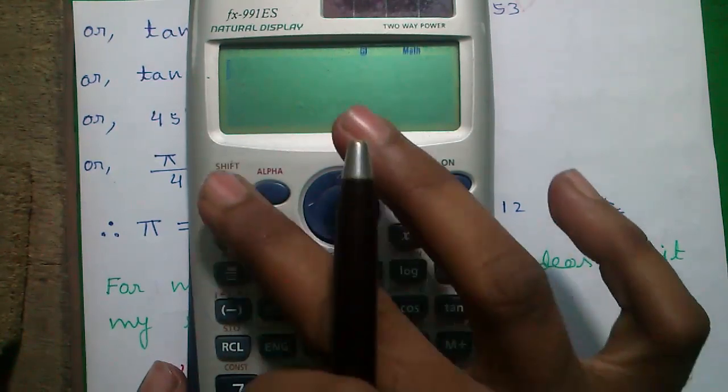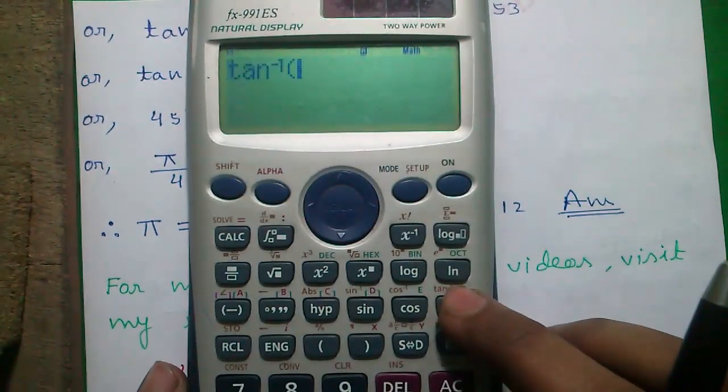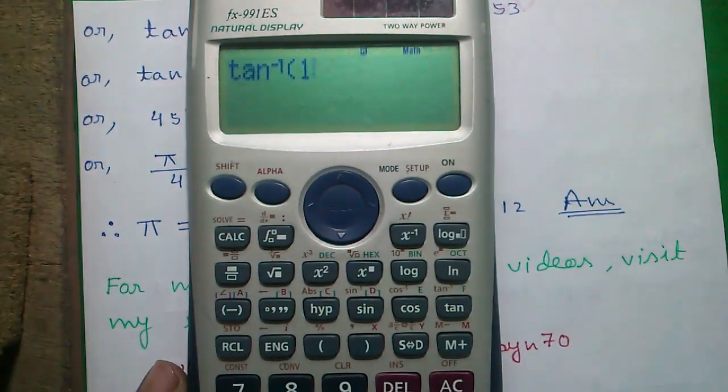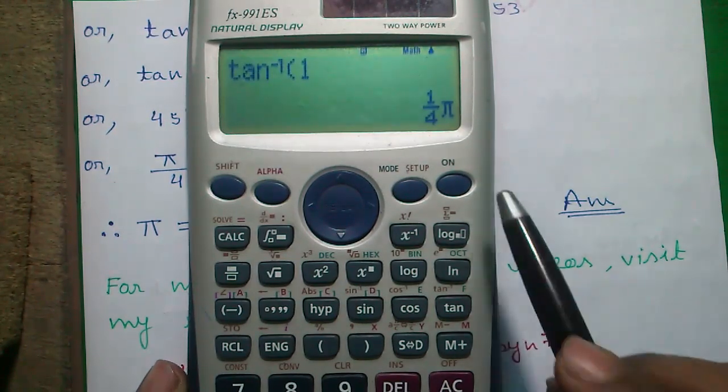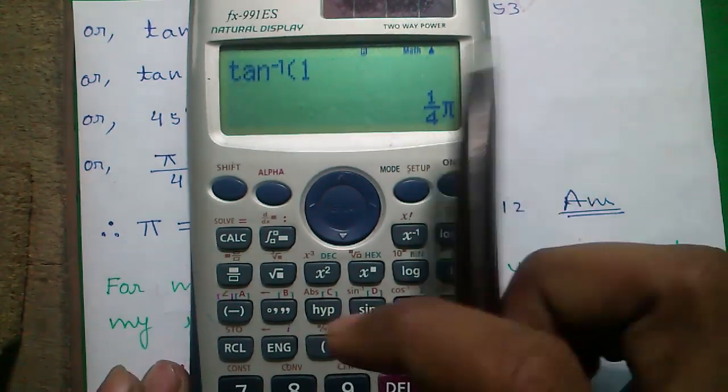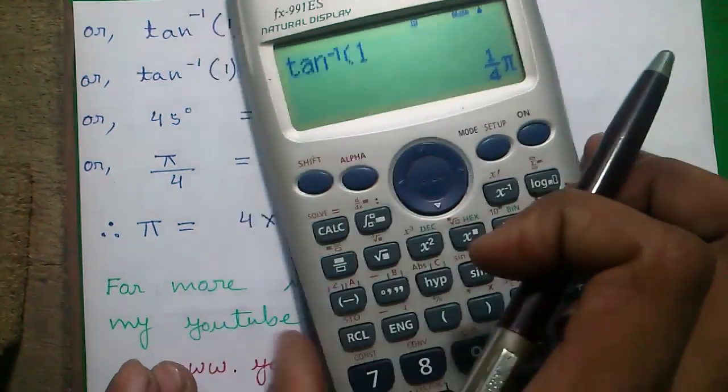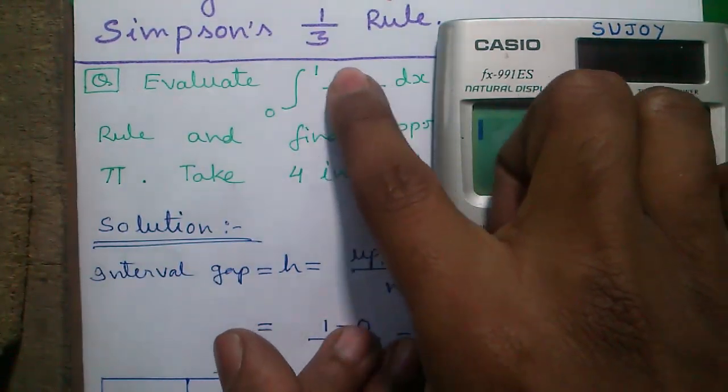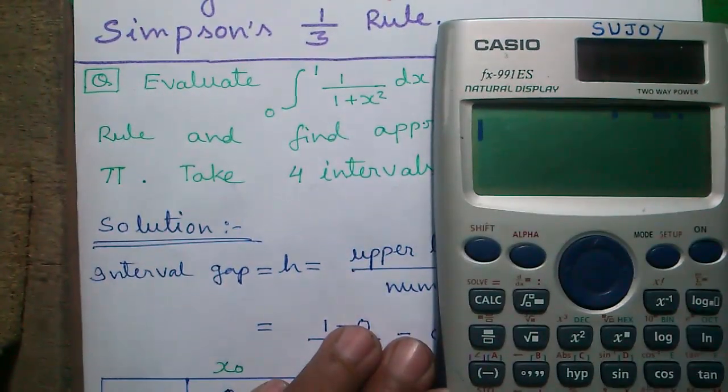You can verify the answer on your calculator. Press shift and tan for tan inverse and 1 and press the equals to button. You will get pi by 4. So tan inverse of 1 equals to pi by 4. And now, I will tell you how to do the numerical integration directly on the calculator.